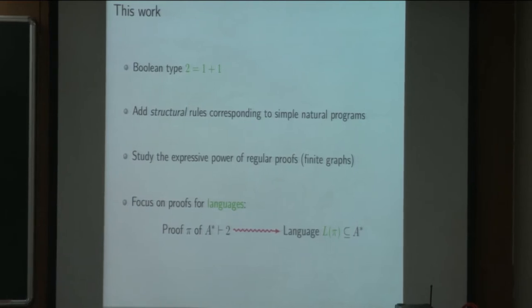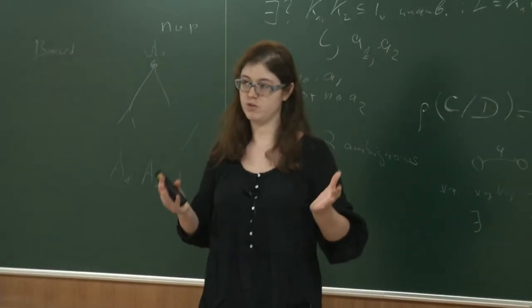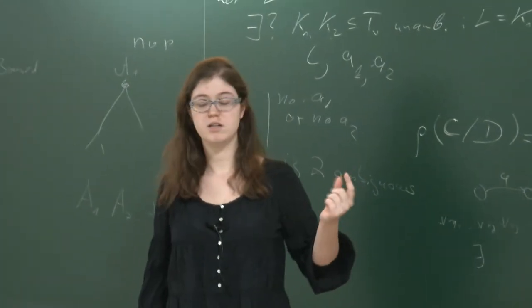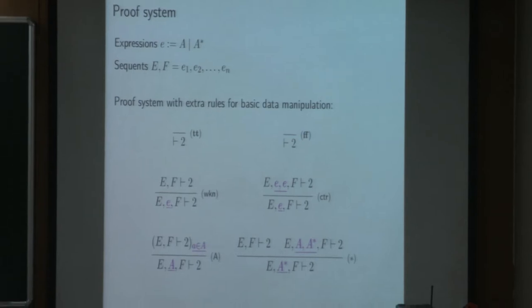In the first time, and what I present here, we focused on proofs for languages. Meaning that we reduce the shape of our sequence to be of the shape A star dash two, where A is an alphabet, which means only looking for functions from A star to two, which is exactly the languages. And the goal is to characterize what kind of language we can obtain with such proofs.